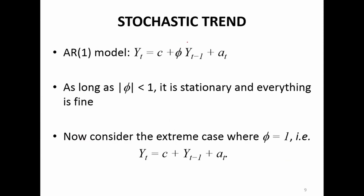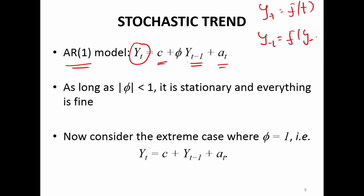Now we'll understand how stochastic trend differs from deterministic trend. We start with an AR-type model: yt = constant + phi*yt-1 + error term. Remember, in the deterministic trend yt was a function of time t, whereas here yt is a function of its past values, specifically yt-1. The previous value of the same time series is not something known to us with certainty, unlike the deterministic case where we know what t will be.